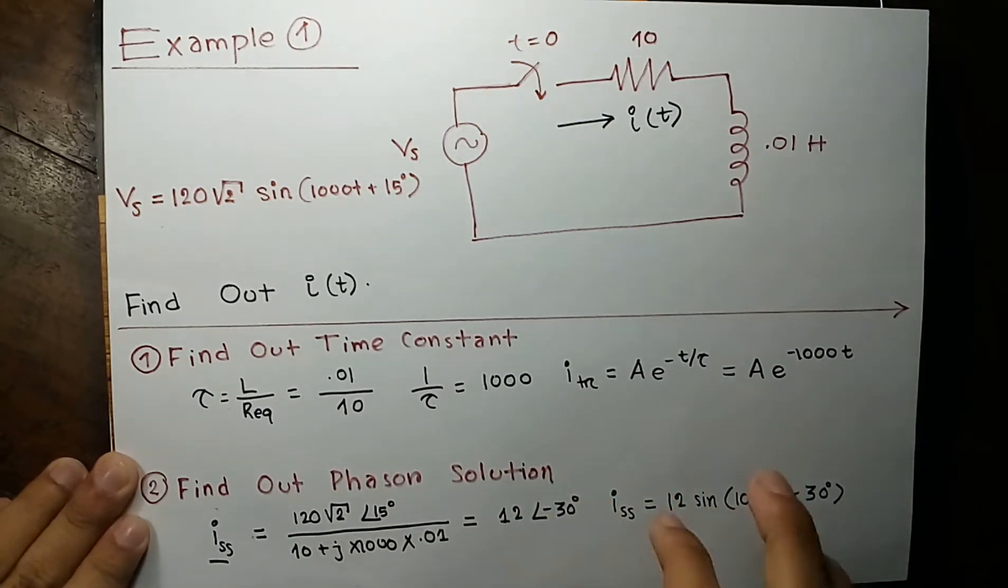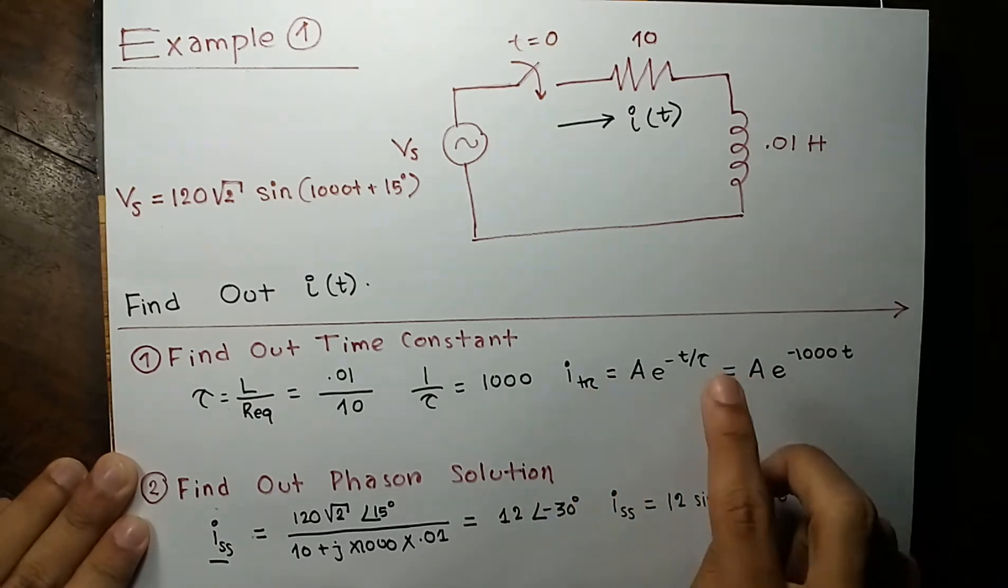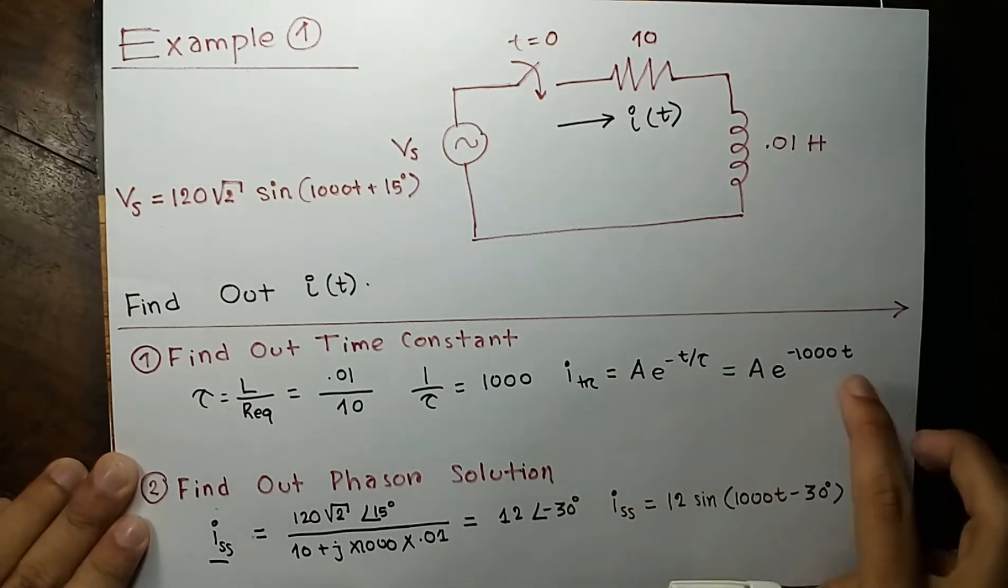And as we know we have to apply our transient solution as A e to the power minus t by tau. And our transient solution becomes A e to the power minus 1000 t.